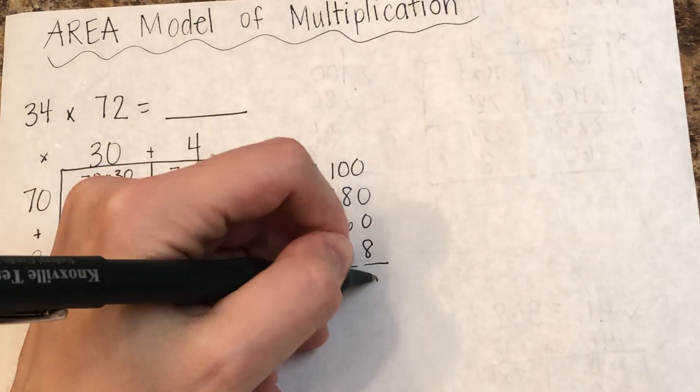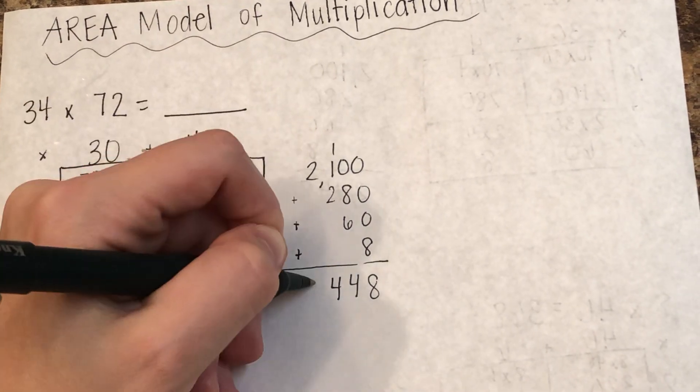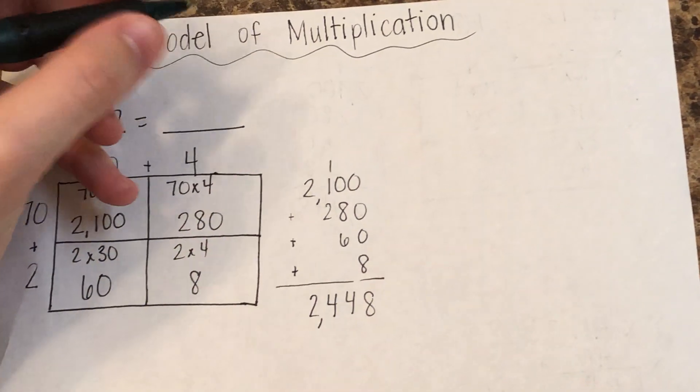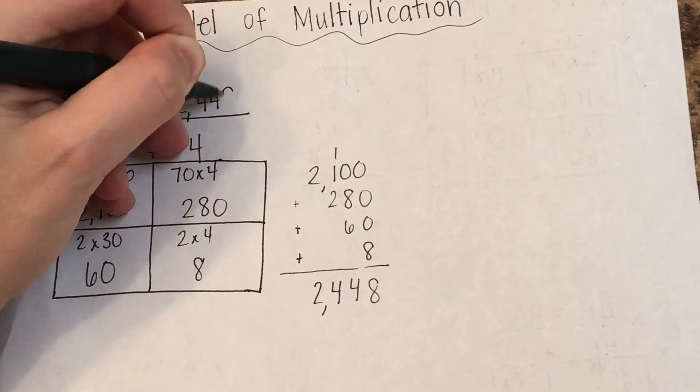And when you add this up, you get 2,448. So 34 times 72 equals 2,448.